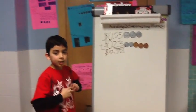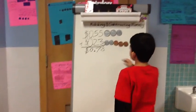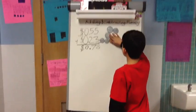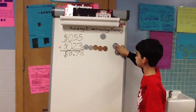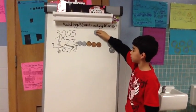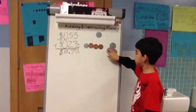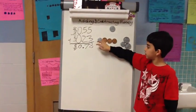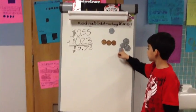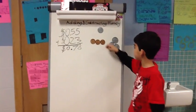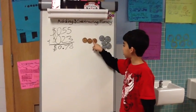Now we're going to check using our coins. 25 plus 25 is 50, plus another dime is 60, plus another dime is 70, and our nickel makes 75.